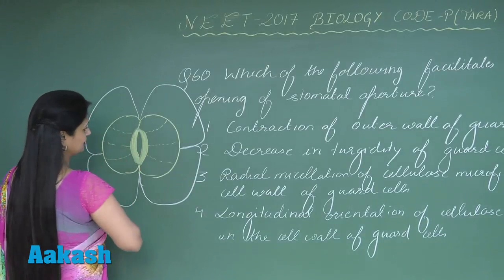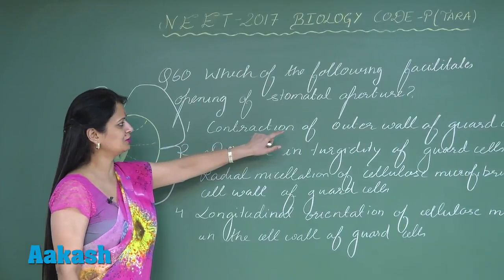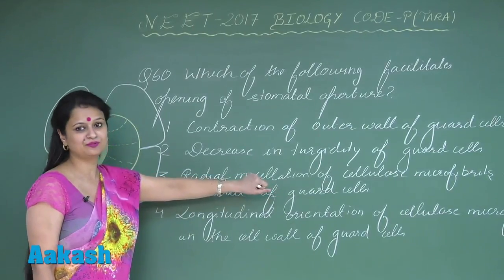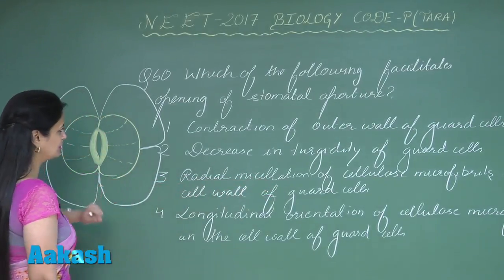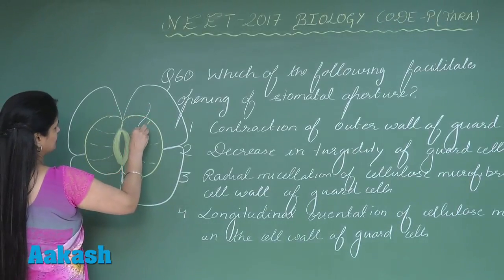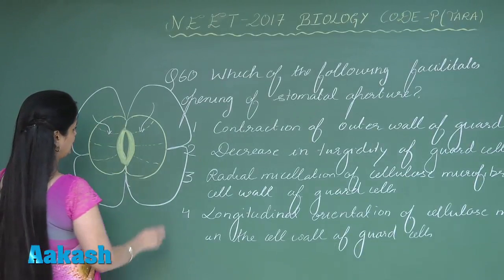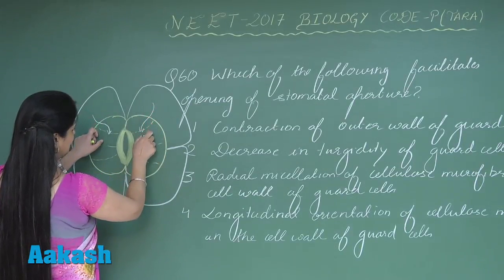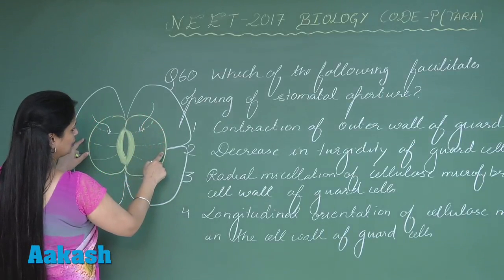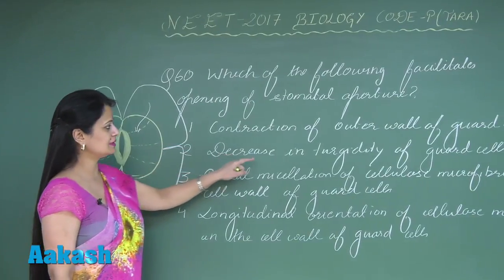The arrangement of microfibrils is radial. Now looking at the first option — contraction of the outer wall of the guard cell — that will not lead to the opening of stomata. From the subsidiary cells, the guard cells take up water which increases turgidity, and when water is taken up, the outer wall does not contract — it expands.